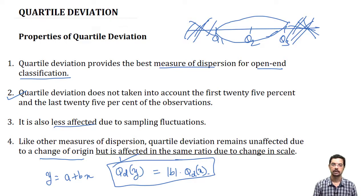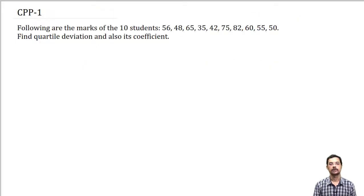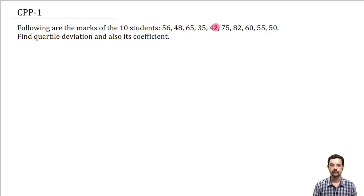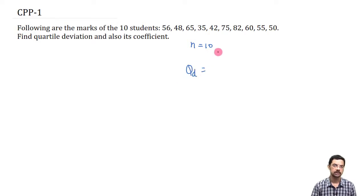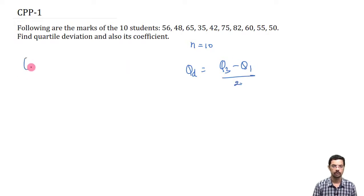We shall now understand some problems on how to find quartile deviation and the coefficient of quartile deviation. We have 10 observations, so n = 10. Quartile deviation = (Q3 - Q1) / 2, so we need to find Q1 and Q3. The coefficient of quartile deviation is given by (Q3 - Q1) / (Q3 + Q1) × 100.